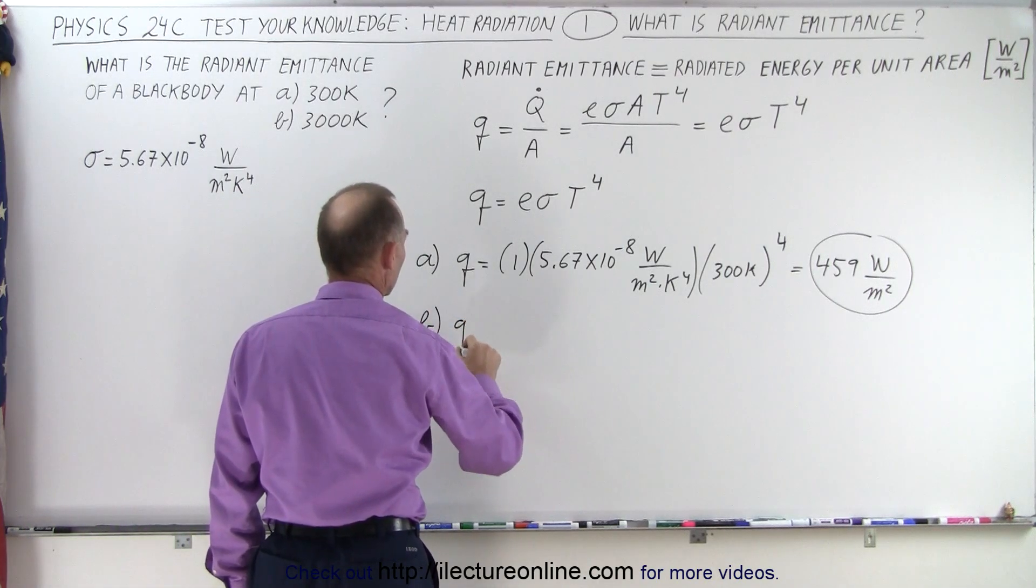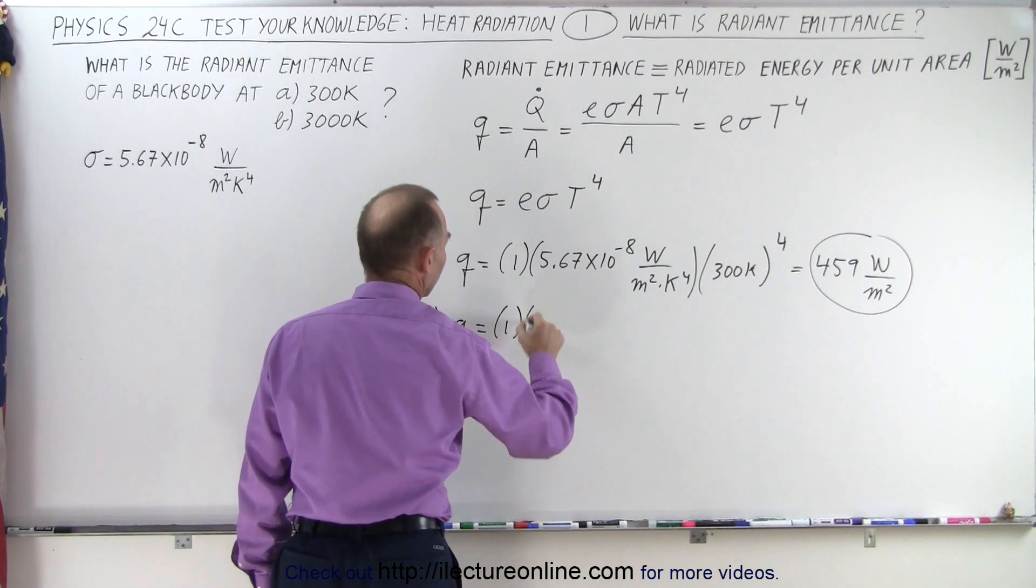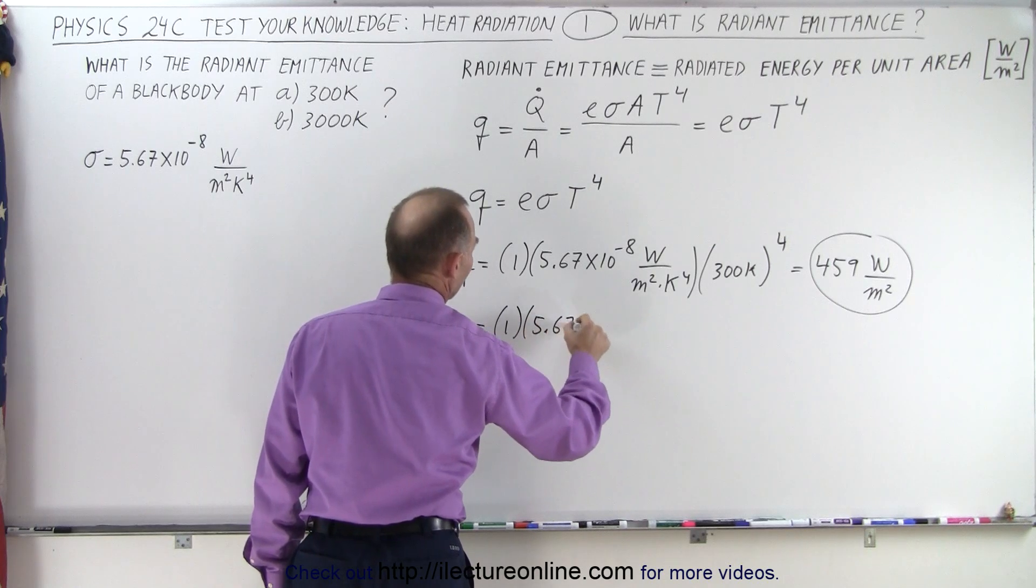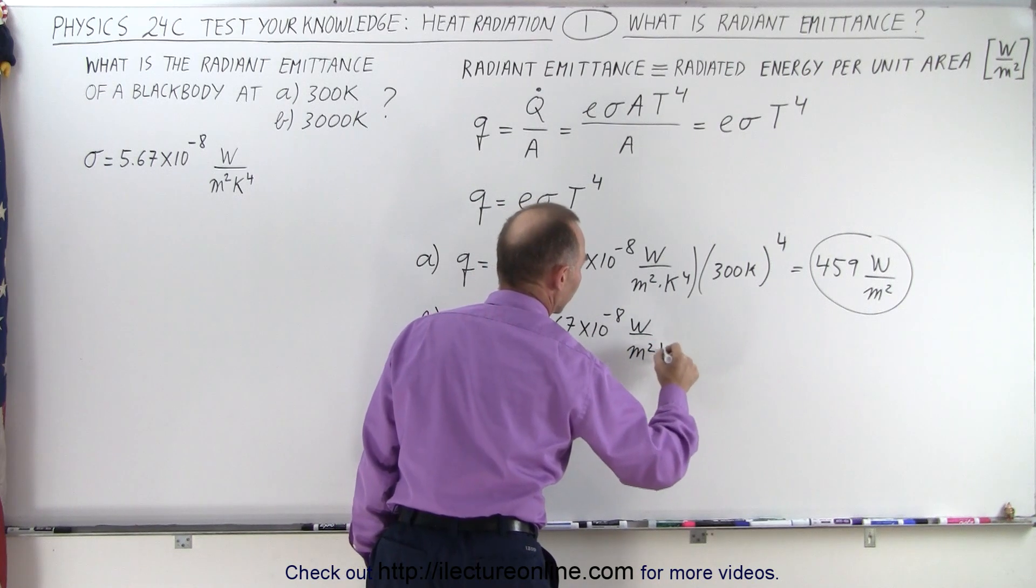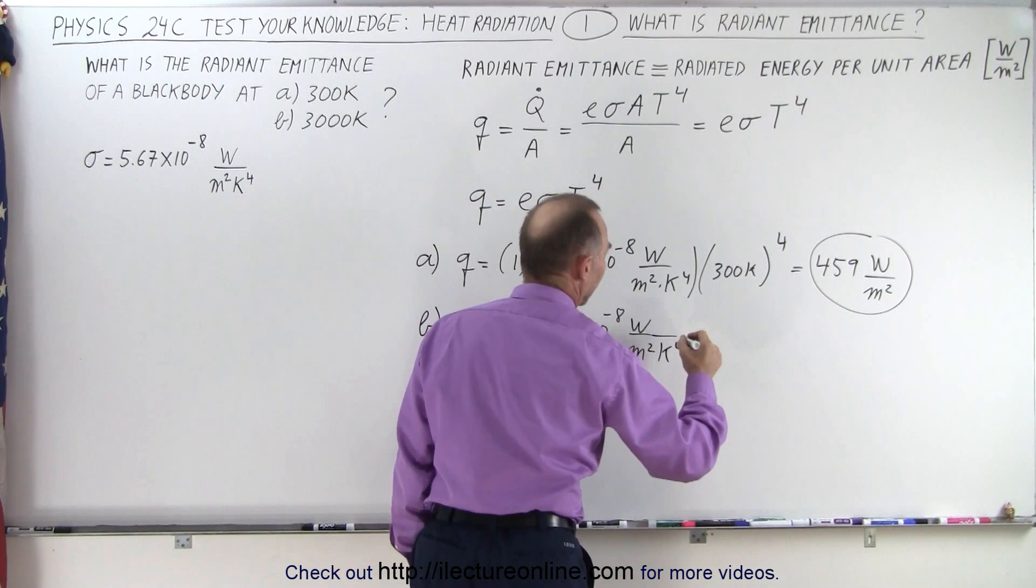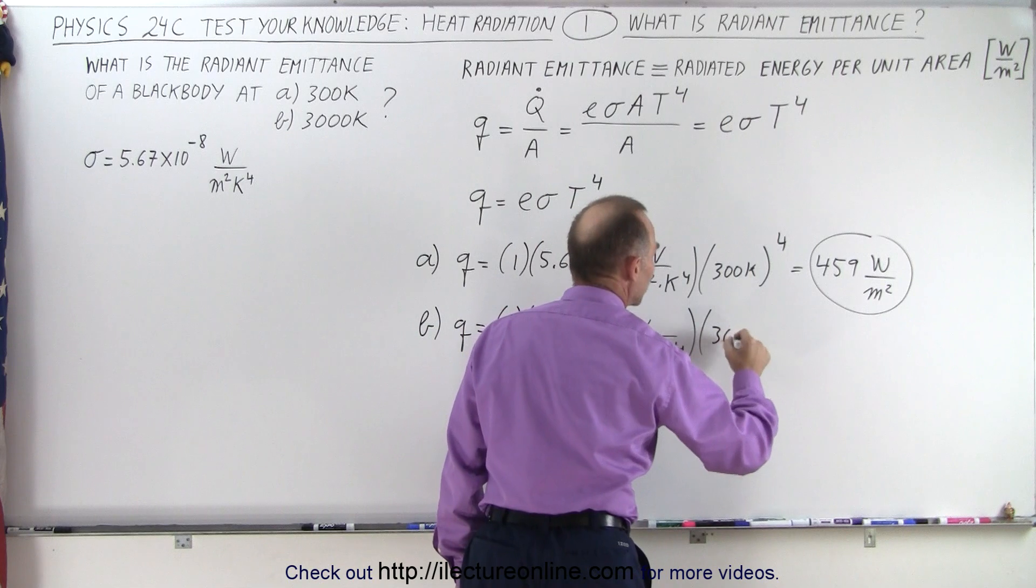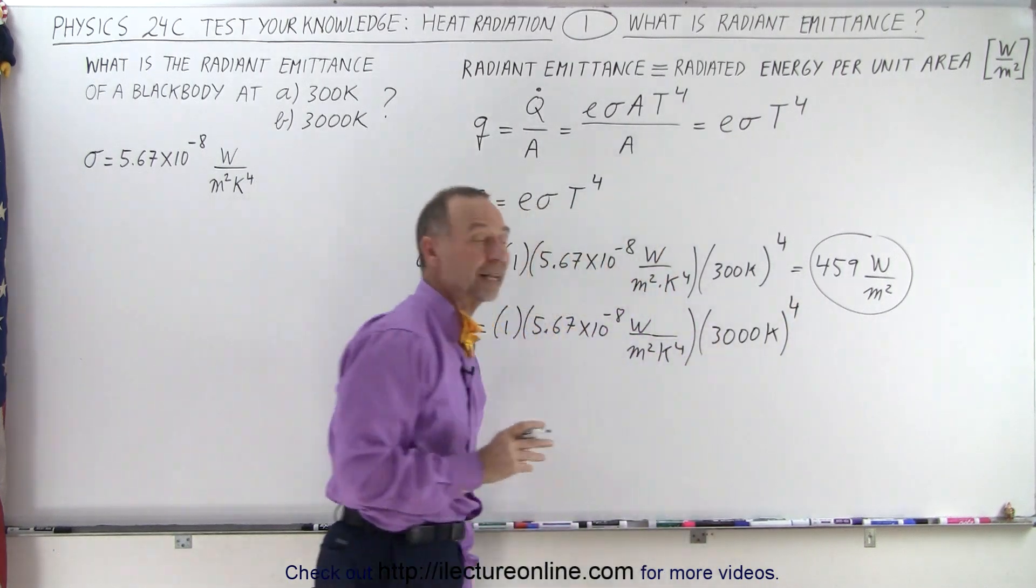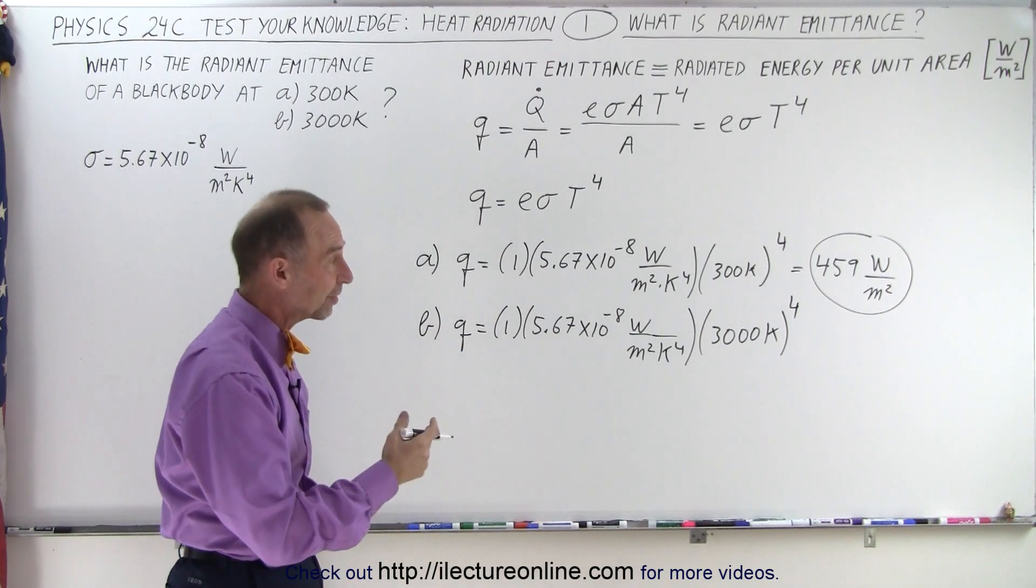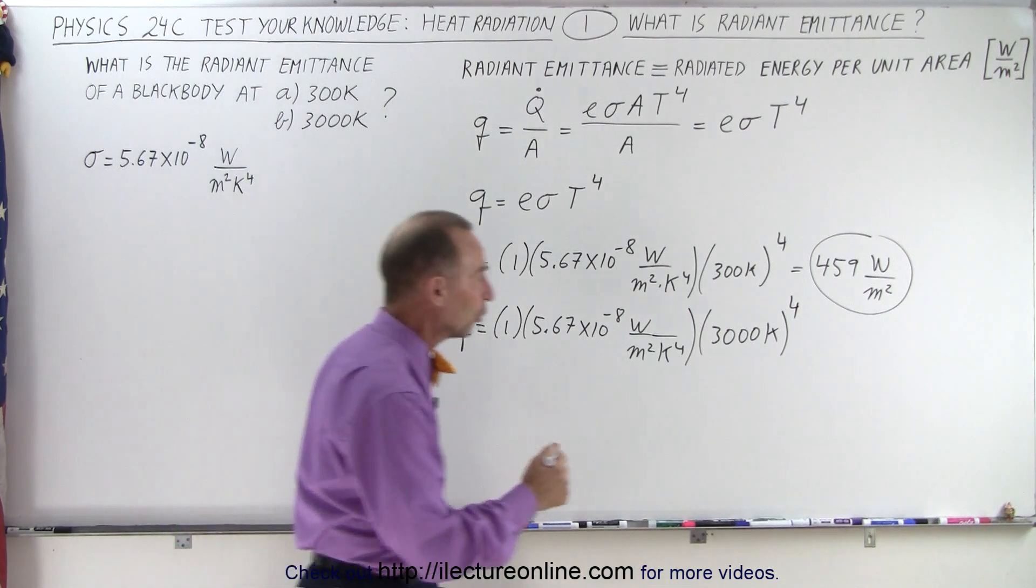So for part B, Q is going to be equal to 1 times 5.67 times 10 to the minus 8 watts per square meter times Kelvin to the fourth power. Then we multiply that times 3000 Kelvin to the fourth power instead of 300 Kelvin to the fourth power. So that's 10 to the fourth times as high, so we add four zeros.